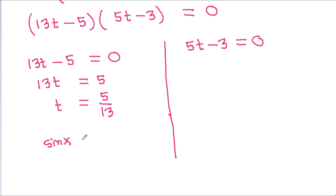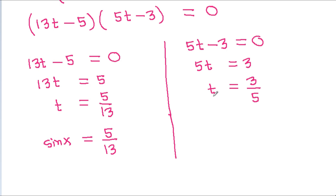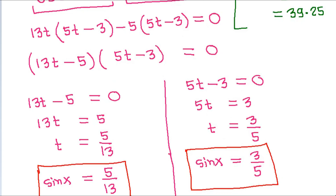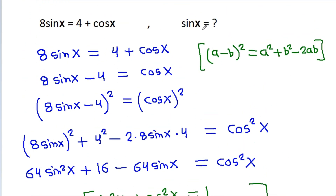Since t is sin x, we get sin x equals 5/13. From 5t minus 3 equals 0, t equals 3/5, so sin x equals 3/5. Therefore, sin x equals 5/13 or 3/5.